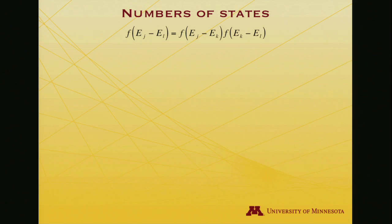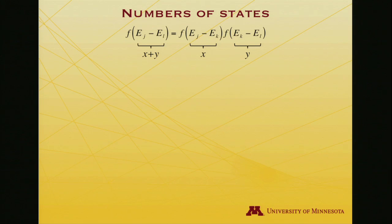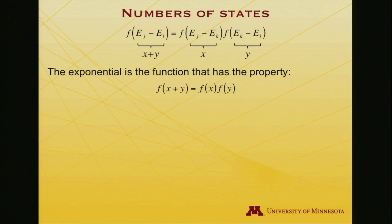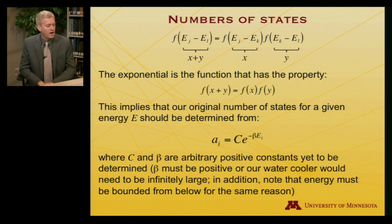Let me give those quantities simpler names: let x = E_j − E_k and y = E_k − E_l. Notice that E_j − E_l equals x + y. So what function satisfies f(x + y) = f(x) · f(y)? It's the exponential function that has that property — the product of two exponentials equals the exponential of the sum. This implies our number of states for a given energy must be expressed as an exponential.